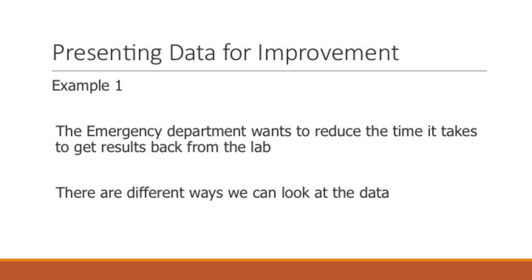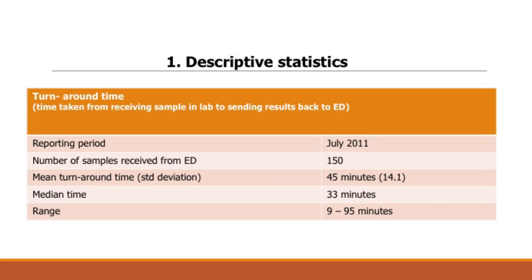Let's say the emergency department wants to reduce the time it takes to get results back from the lab. There are different ways we can look at this data. One way is to use descriptive statistics. Our data shows that the reporting period was July 2011, the number of samples received from the ED were 150, the mean turnaround time was 45 minutes with a standard deviation of 14.1, the median time was 33 minutes, and it ranged from 9 to 95 minutes. If you look at this data — which is not an uncommon way to receive a data report — what would you start to think about as an improvement?